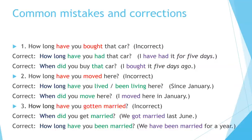Common mistakes and corrections. 1. How long have you bought that car? Incorrect. Correct: how long have you had that car? I have had it for five days. Or: when did you buy that car? I bought it five days ago — notice that five days ago is a specific time in the past. 2. How long have you moved here? Incorrect. Correct: how long have you lived here, or how long have you been living here — since January. Or: when did you move here? I moved here in January. 3. How long have you gotten married? Incorrect. When did you get married? I got married last June. How long have you been married? We have been married for a year.